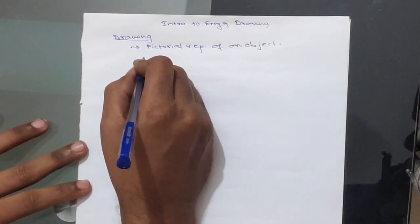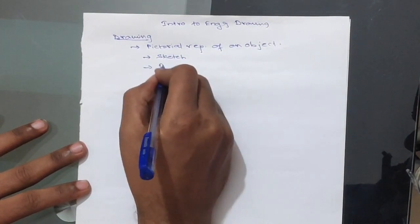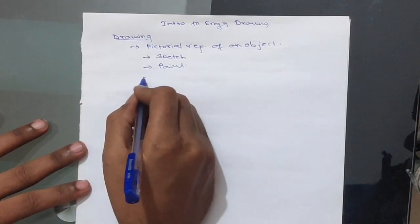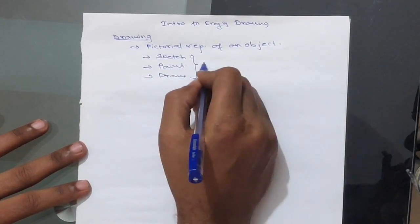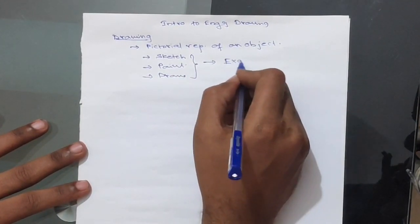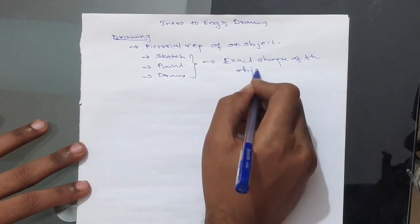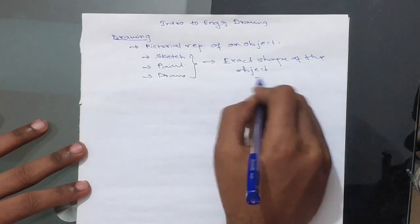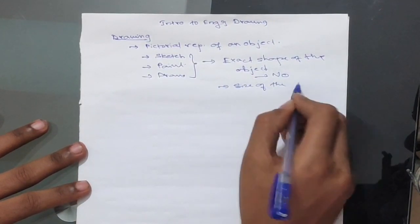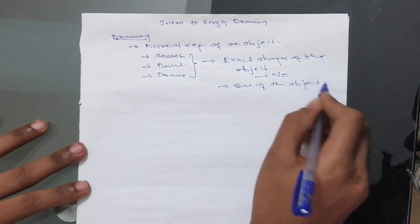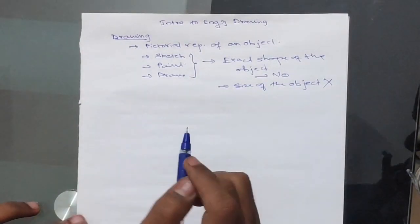What we do to represent this pictorially, we sketch it, we paint it or we draw it. But, whether these will give you what is the exact shape of the object? No, also it will not give you exact size of the object.